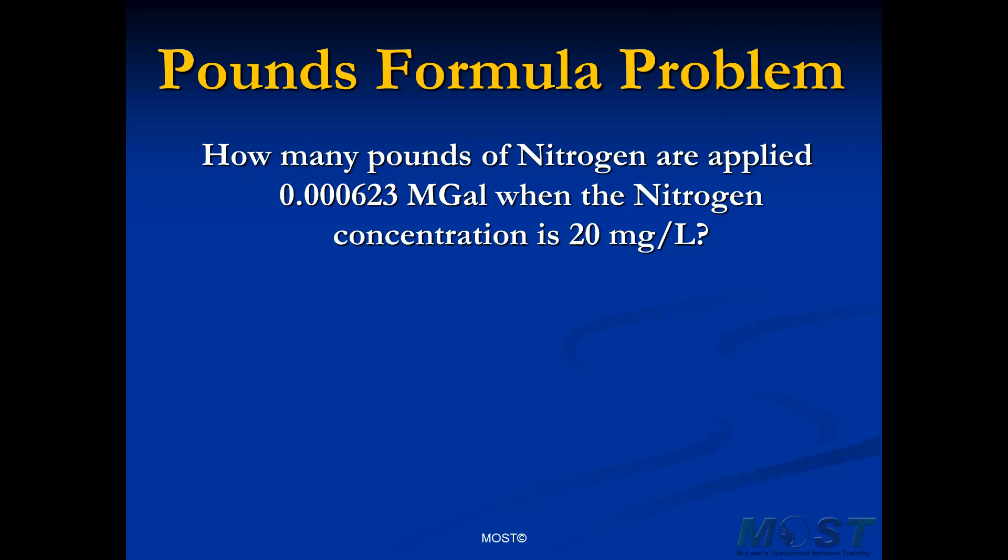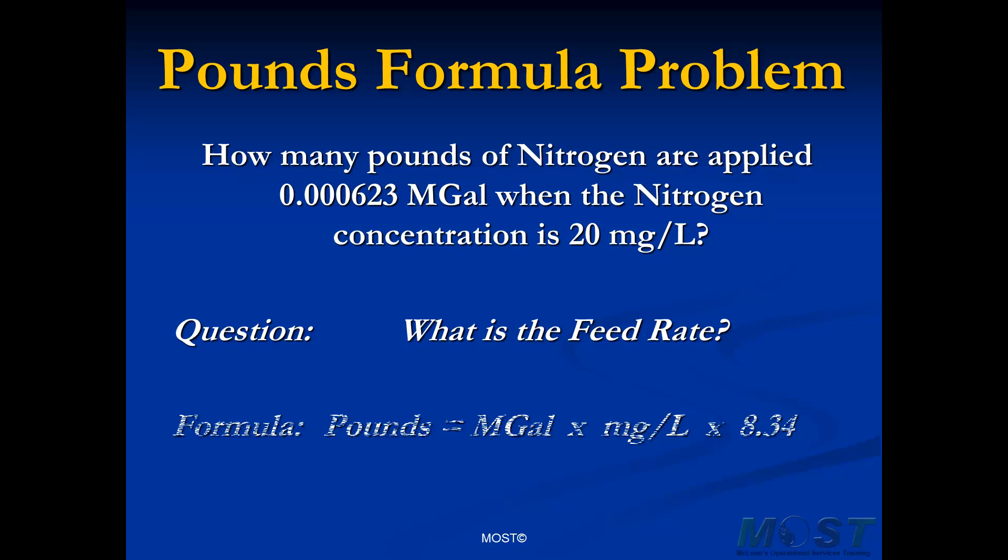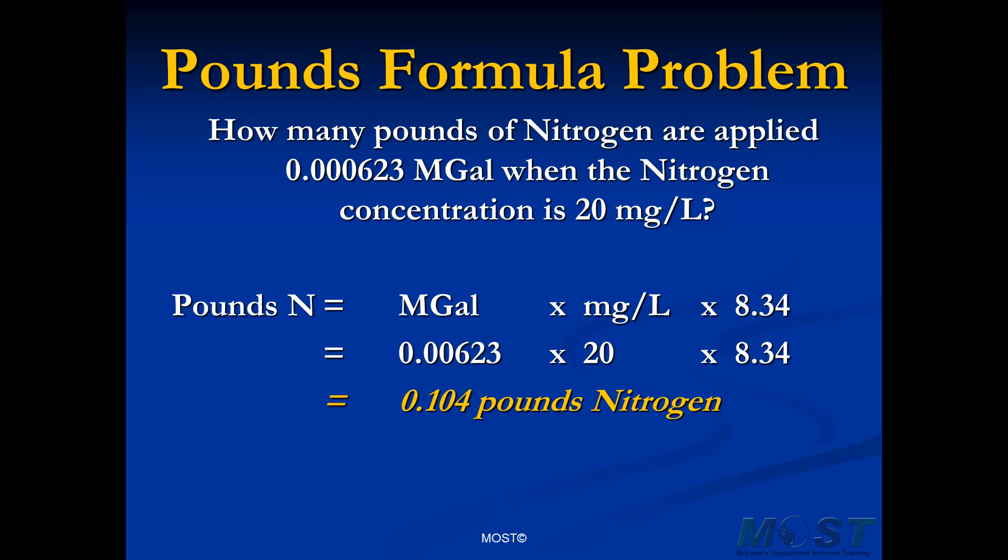How many pounds of nitrogen are applied? We're back to the pounds formula. That will be the million gallons that we just found, the 0.000623 million gallons, and multiply by the milligrams per liter, the 20 parts per million of nitrogen, times 8.34. It is 0.000623 times the 20, times the 8.34. A tenth of a pound of nitrogen is added to this 1,000 square feet if we apply one inch of irrigation water. So that's how we would solve this particular problem.